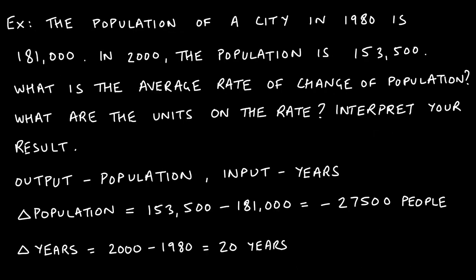Here's an example of where slope and average rate of change become useful. There's an imaginary city with a population of 181,000 in 1980. Twenty years later, in 2000, the population is found to be 153,500 — maybe people moved away, or there was a natural disaster. The question asks: what is the average rate of change of population, what are the units on the rate, and how do we interpret the results?